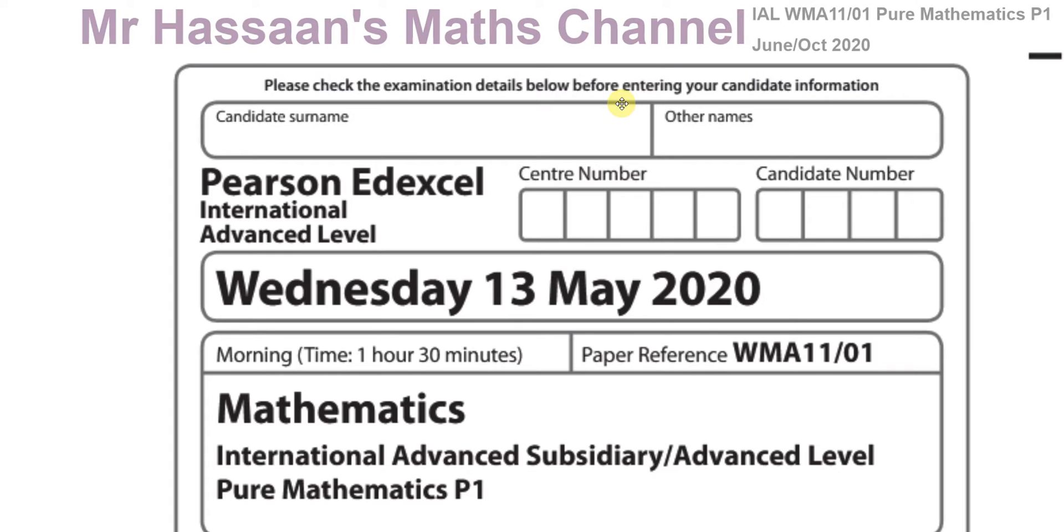Which was supposed to have taken place in June 2020. As the year 2020 was dominated by the whole coronavirus, COVID-19, this paper was actually cancelled and no exams took place anywhere in the world. None of the A-Level exams took place.